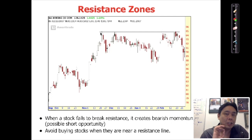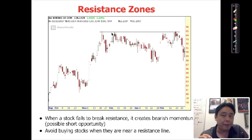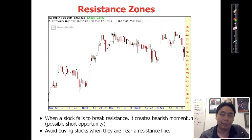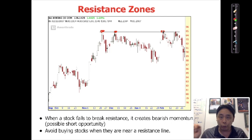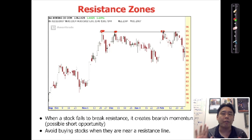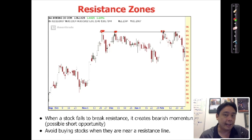A few things to understand. Number one: to qualify as a significant resistance, the price has to be hit at least three times — one, two, and three. That's a resistance. Two points connected together is what I call a probationary resistance. It's only confirmed if it's hit three times. That's the first lesson to learn.